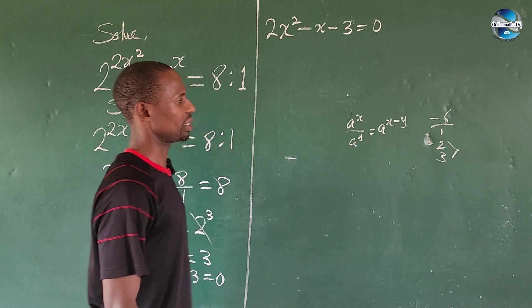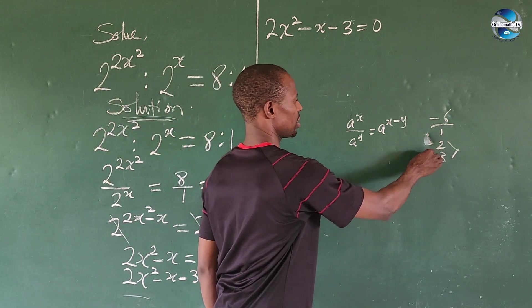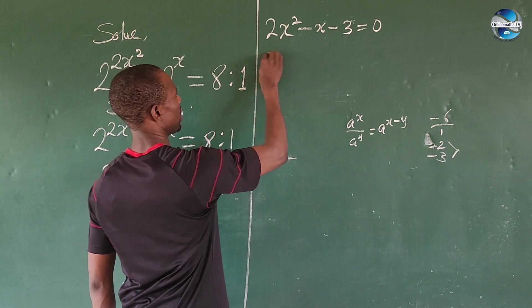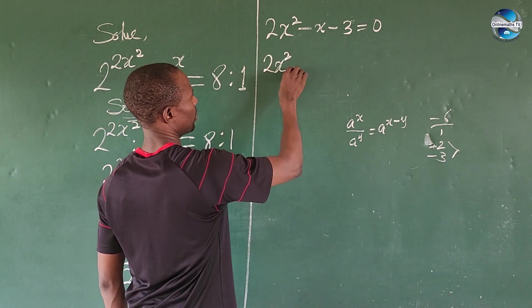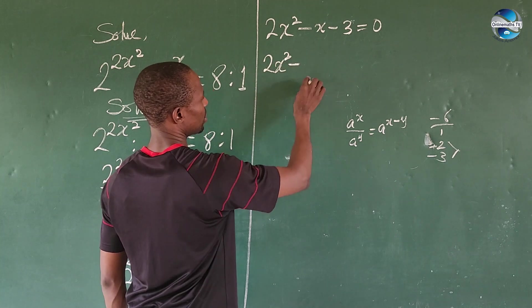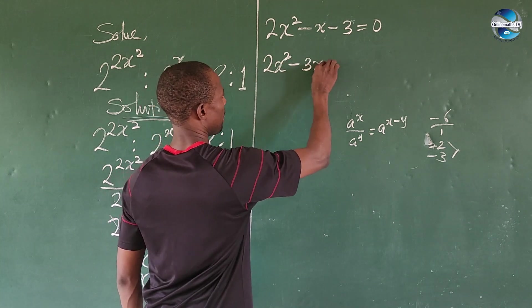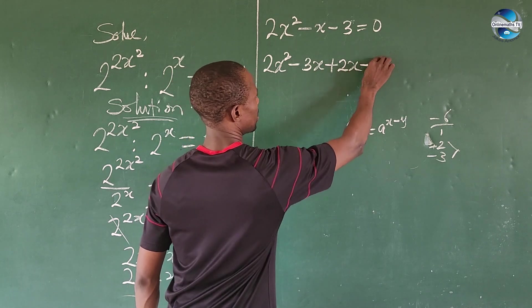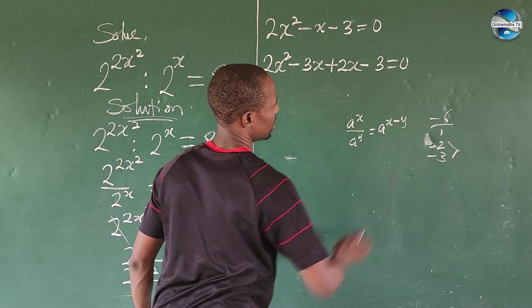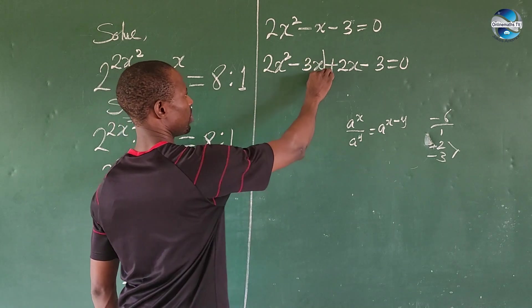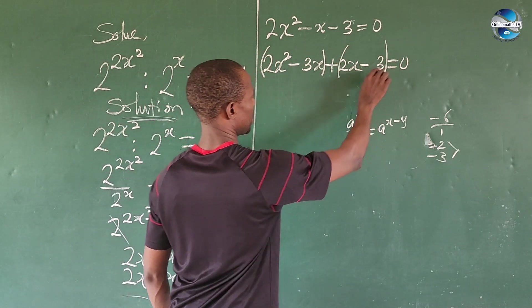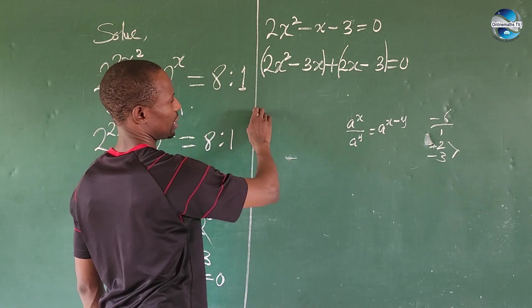The factors are -3 and +2. From here we can write this as 2x² - 3x + 2x - 3 = 0. We can now put this in brackets.